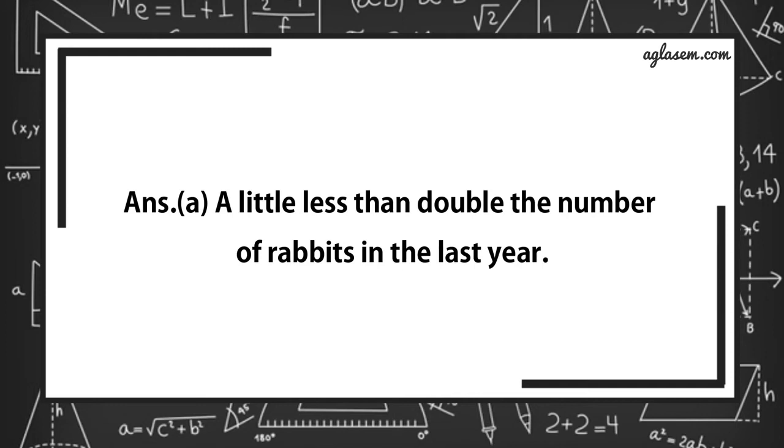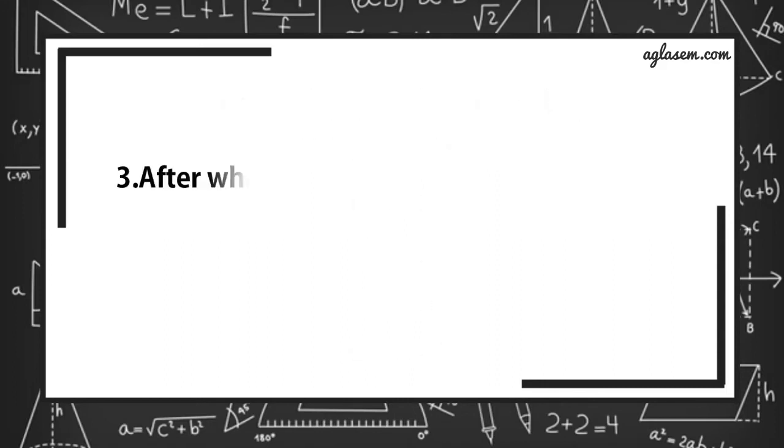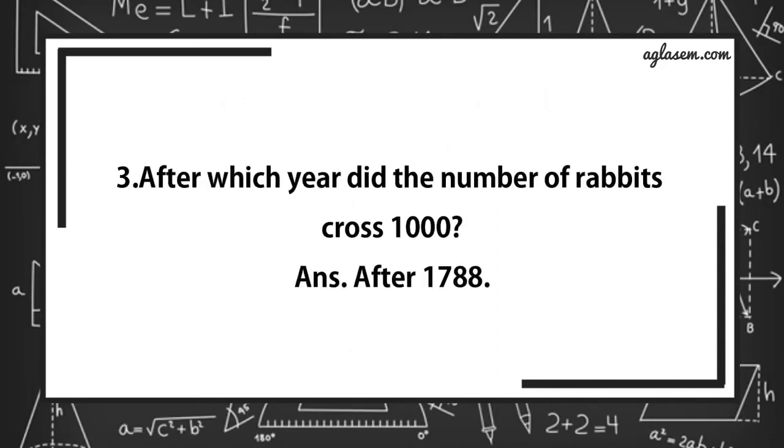Further, question 2. At the end of year six, the number of rabbits was close to 400, 600 or 800? Answer is 400. Third part, after which year did the number of rabbits cross thousand? Answer is, after 1788.